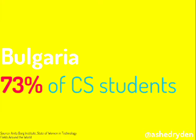One statistic I left out: Bulgaria. How are they getting three times — sometimes ten times — more women in CS than some of these other countries? The thing not represented in this statistic is that in Eastern Europe, it's much more likely that parents push their children, regardless of gender, into a STEM field. Women actually graduate at a much higher rate in Bulgaria and make up a much larger percentage of STEM fields. If a country with a lower GDP than the United States is doing so much better at this, why aren't we?